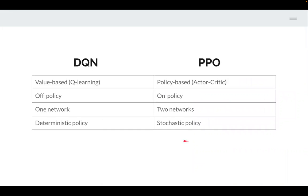We implemented a Deep Q-Network (DQN) and a PPO agent. The DQN is a value-based method utilizing Q-learning, whereas PPO is policy-based with an actor-critic network. DQN is off-policy and PPO is on-policy. DQN has one network while PPO utilizes two networks. The output of DQN is a deterministic policy, whereas PPO has a distribution over the action space, making it more stochastic.